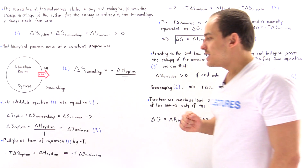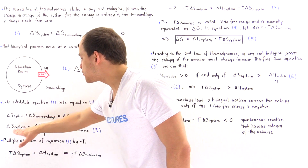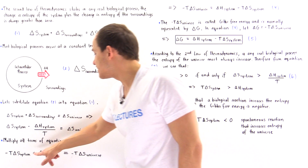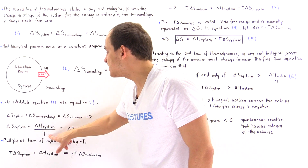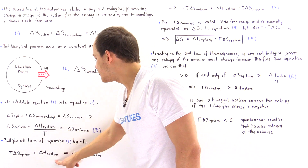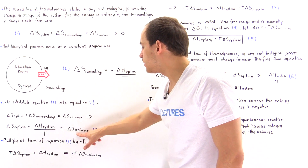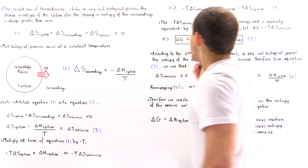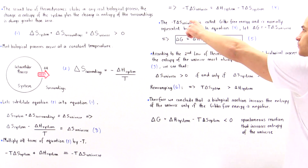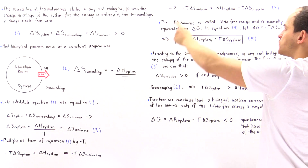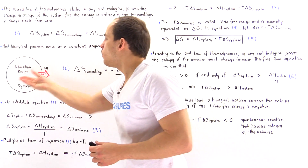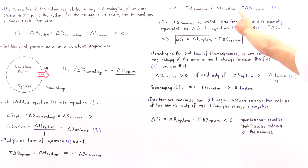Let's call this equation three. If we take equation three and multiply each term by negative T, we get: negative T times delta S of the system becomes the first term, the T's cancel on the enthalpy term giving positive delta H of the system, and this quantity becomes negative T multiplied by delta S of the universe. Rearranging gives us equation four.